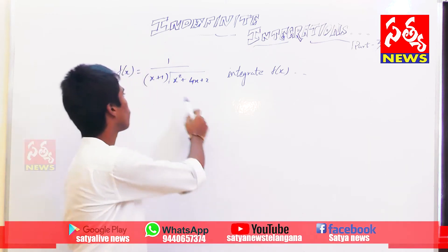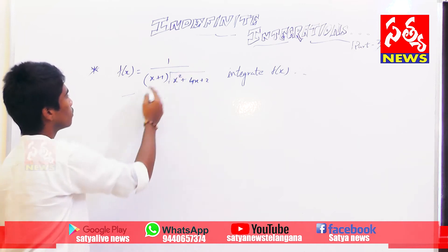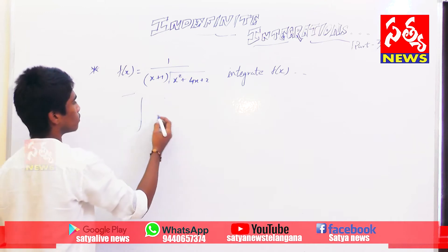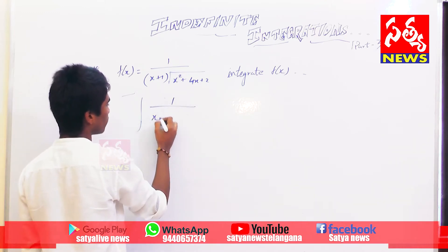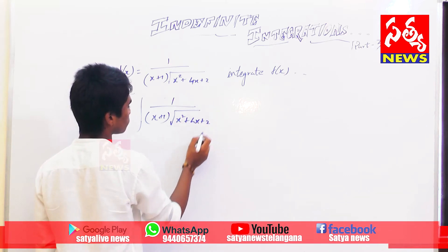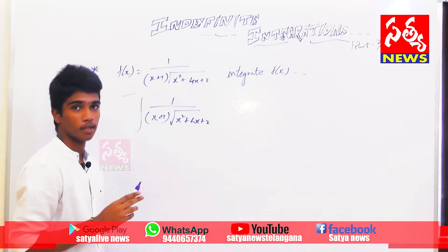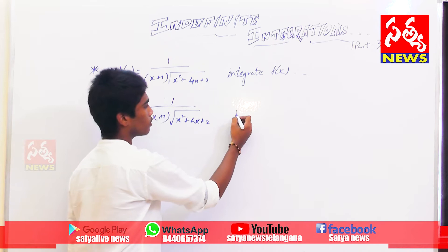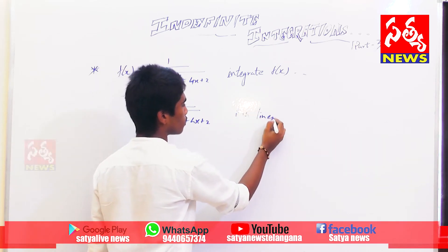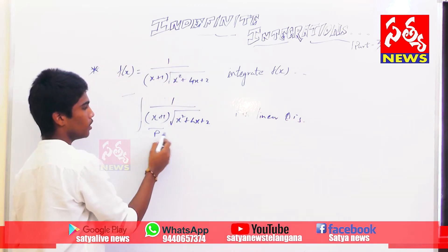So here is the function f(x), which is in the form of an irrational function. We are asked to integrate f(x), which is: integration of 1 divided by (x+1) times the square root of (x² + 4x + 2). Looking at this, it is the same as the third method — p is linear and q is quadratic.